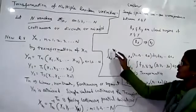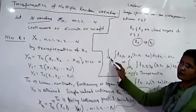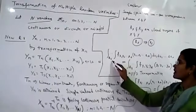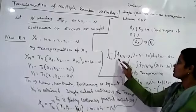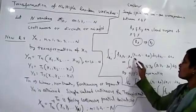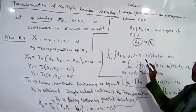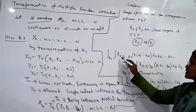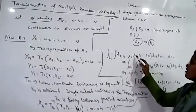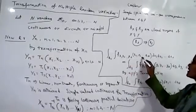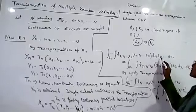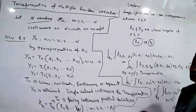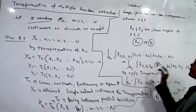The integral over the closed region R_x with respect to all N x-variables — x_1, x_2, ..., x_n — gives you the area of R_x. Since we have N random variables, we will have N integrations. The region is R_y with variables y_1, y_2, ..., y_n.